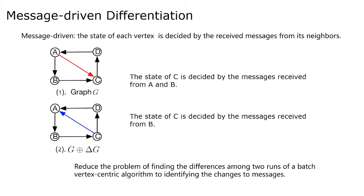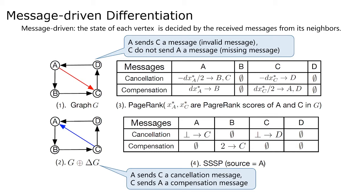Due to this property, we can reduce the problem of finding the differences between two rounds of a batch vertex-centric algorithm to identifying the changes to messages. After fetching the messages that differ between the original and updated graphs, the next phase is to replay the computation on the affected area that receives such changed messages. For example, from the first graph to the second graph, there is an addition of edge CA and a deletion of edge AC. Invalid and missing messages are generated. Ingress only sends cancellation and compensation messages to adjust the graph analysis results. Figures 3 and 4 list the cancellation and compensation messages when performing incremental PageRank and SSSP.